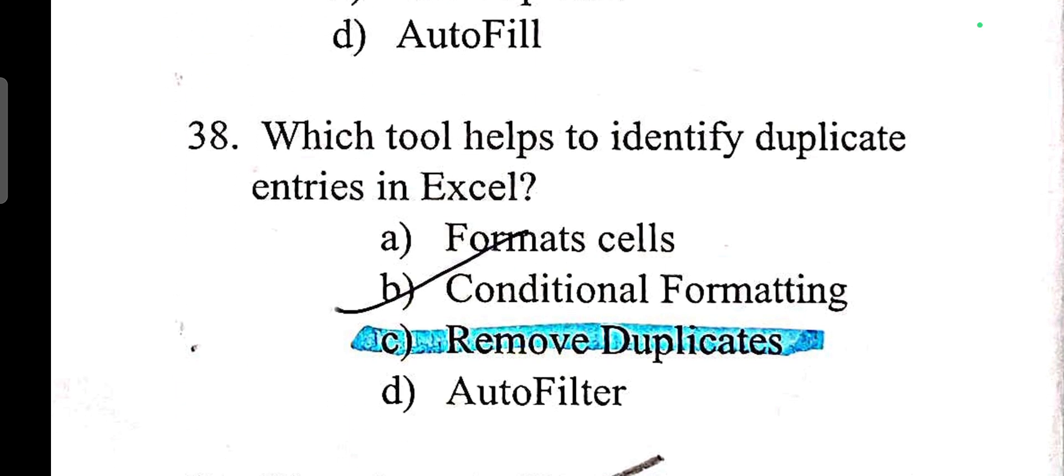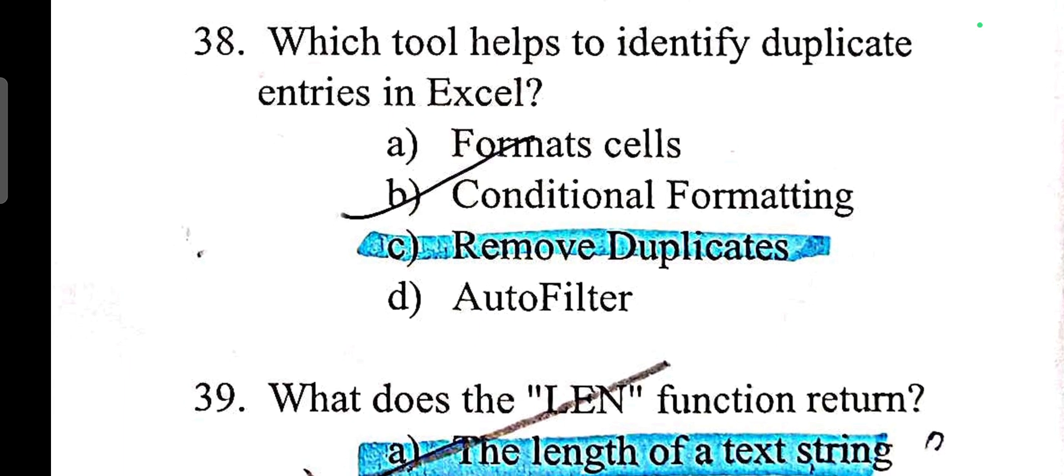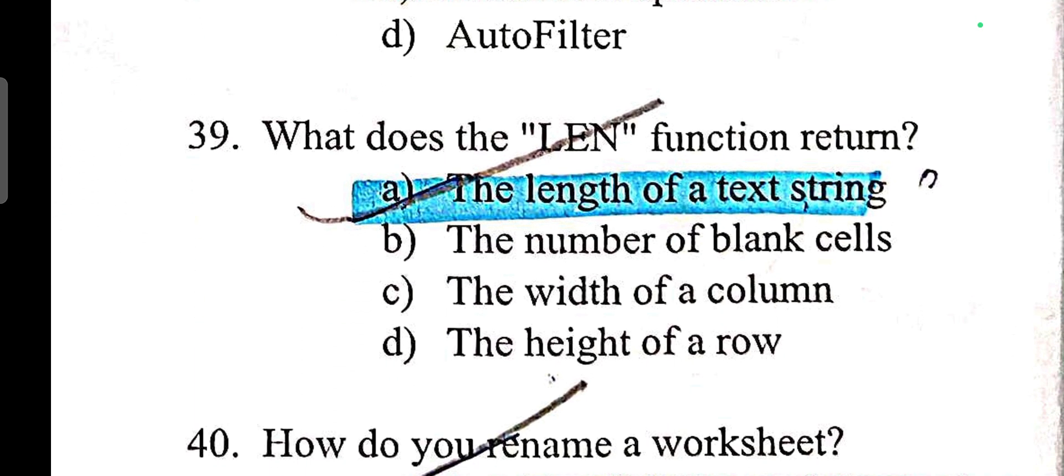Which tool helps to identify duplicate entries in Excel? Remove duplicates. You can identify by conditional formatting help. We use remove duplicate function or unique function for this. What does length function return? The answer is the number of characters in a string or the number of bytes required to store a variable, the length of text string. How do you rename a worksheet? Double click the worksheet tab and type the new name.